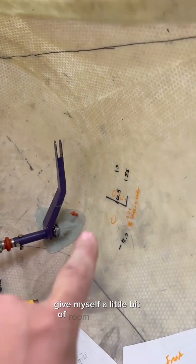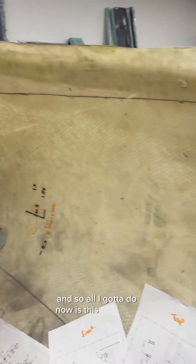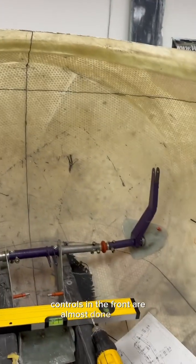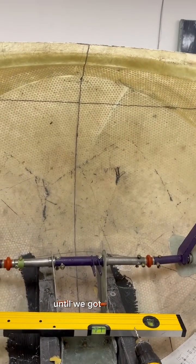But those are done and ready just to glue in. So all I got to do now is this side over here. The controls in the front are almost done minus one rod in the middle. I got to wait until we got the keels in for the dash.